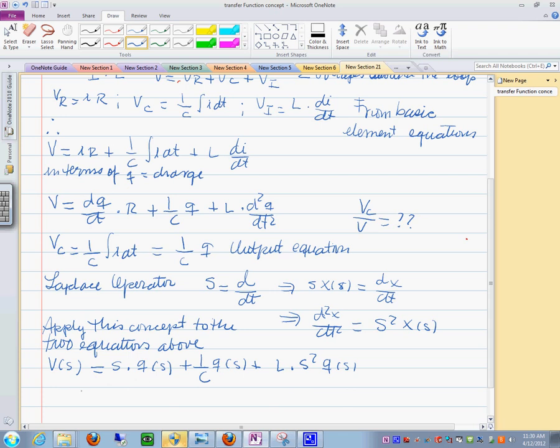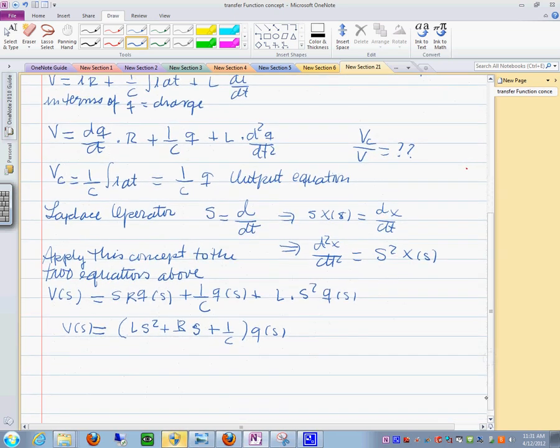You can simplify this by saying that if you organize this, this would be LS squared plus S times R plus 1 over C multiply by Q of S like that. So this is your system equation.